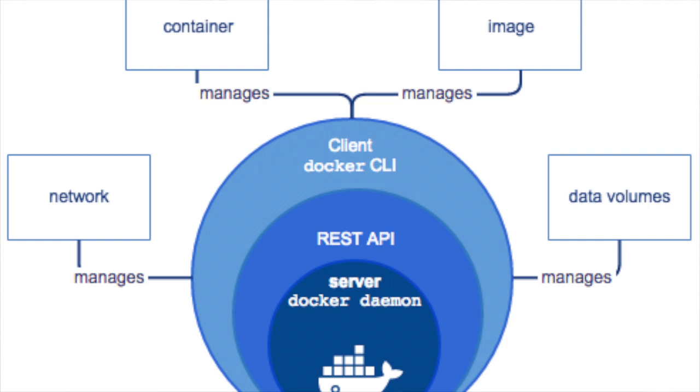The daemon manages these components via REST API, and we can use our Docker client to communicate with this daemon. The daemon does all the heavy lifting for us. Some of you may have noticed this resembles the client-server architecture — and you'd be right. Docker can run the client and the daemon on the same server, or the client on one server and the daemon on another.